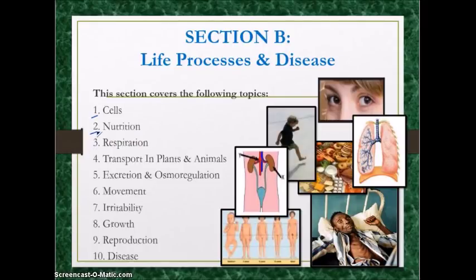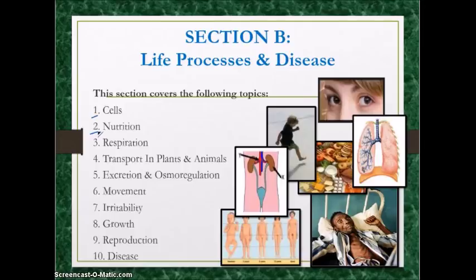Secondly, nutrition, broken down into plant nutrition and human nutrition. For human nutrition, you should know about the nutrients needed in the diet, the digestive system structure, the enzymes involved in digestion, how temperature and pH affect enzyme activity, and the deficiency diseases caused by a lack of particular nutrients. For plant nutrition, you should know the photosynthesis equation, how photosynthesis occurs, and the structure of the leaf both externally and internally.